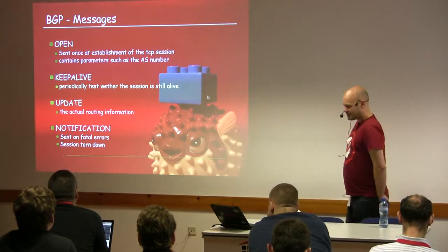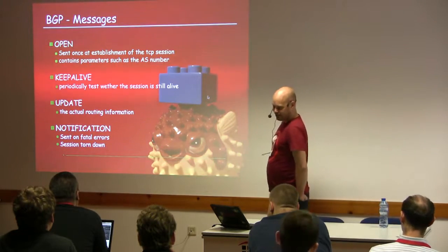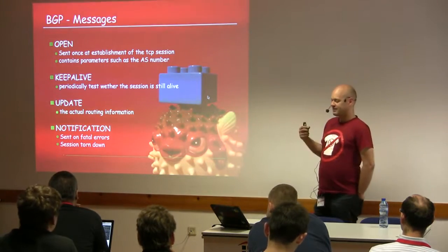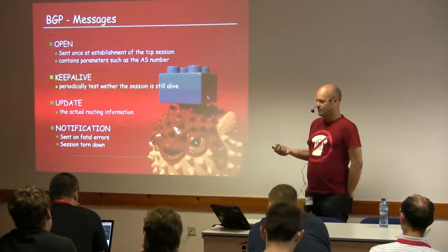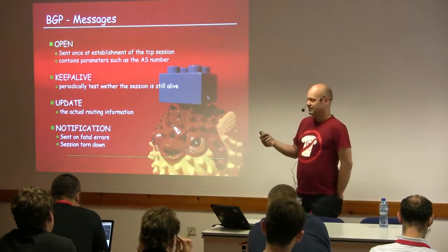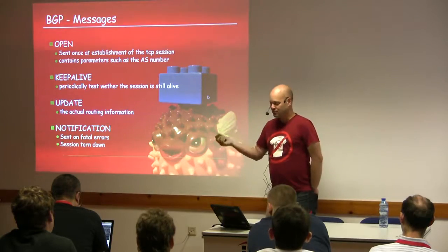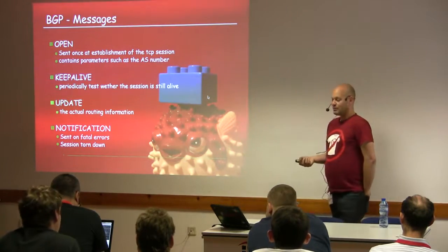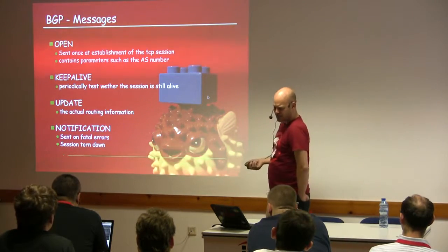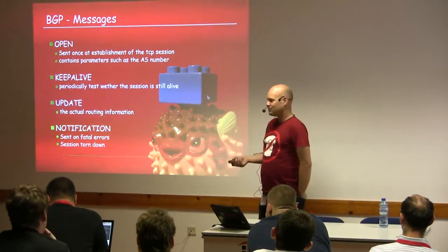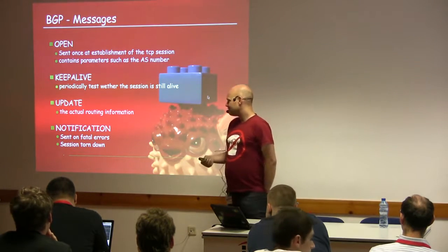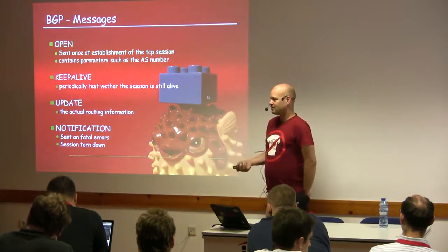BGP really only knows about four messages — there's a fifth added later but basically four. There's an OPEN message sent once the TCP session is established that tells your peer your AS number and timing parameters. There are keepalives, frequently exchanged to confirm connectivity. There are UPDATE messages containing the actual routing information. And there's the one you don't want to see: the NOTIFICATION. A fatal error happened — when you send or receive one, you must tear the session down and delete the routes.